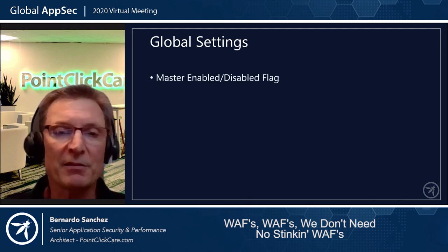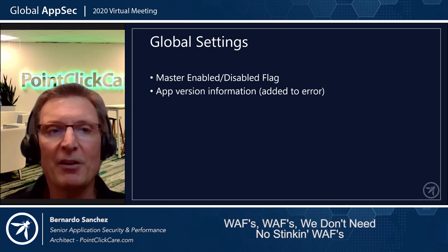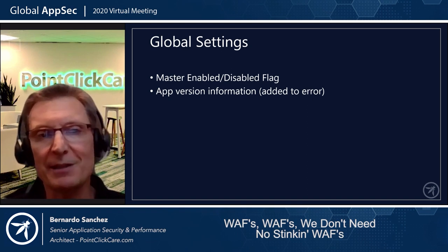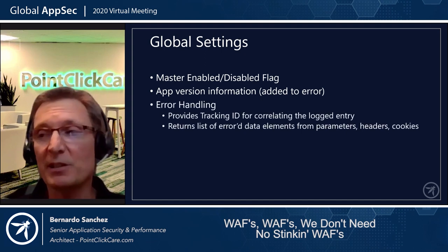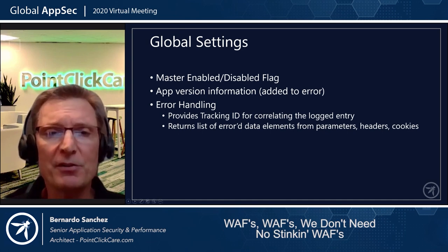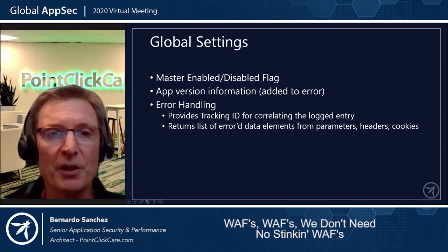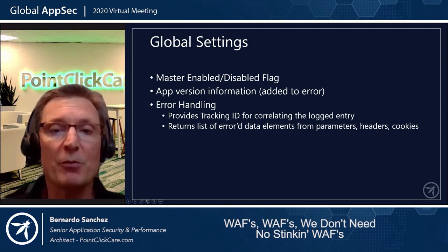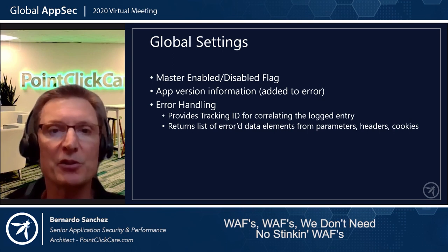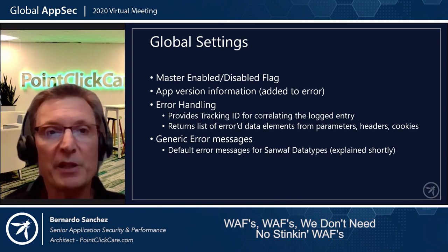Let's talk about global settings. There's a master enable/disable flag. It also includes app version information — useful because every time you have an error and it gets logged, you know exactly what application version the error occurred in. It also defines error handling: do you want a tracking ID correlated with the log entry? Do you want it to return the list of elements, or just pass/fail? And there are generic error messages — default error messages for SANWAF data types.